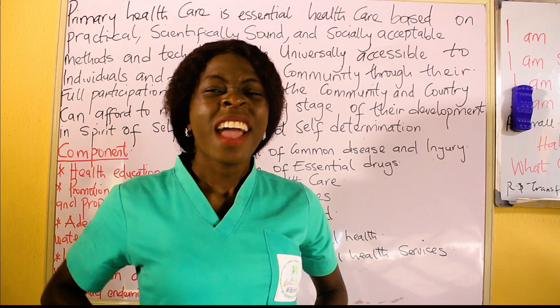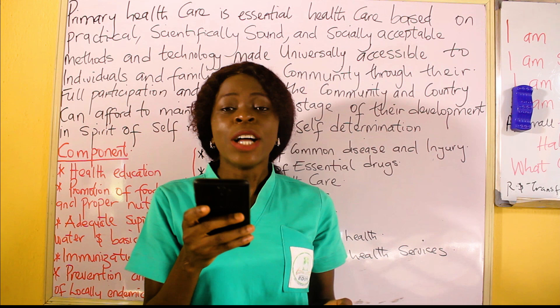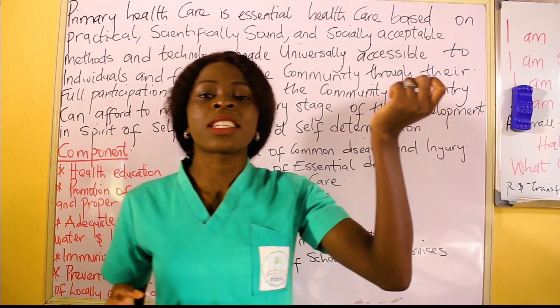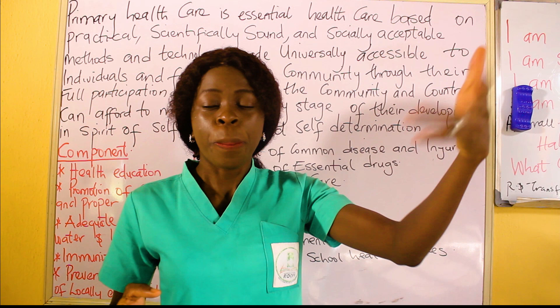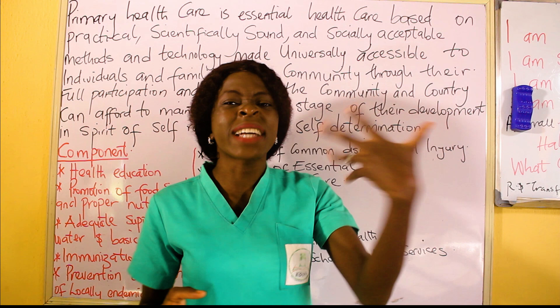The third question asks us to state five objectives of the primary health care center. An objective is like what we want to achieve — what we want to see for the betterment of the community. What is the primary health care trying to improve? What are their goals? That is what the objectives of primary health care are all about.